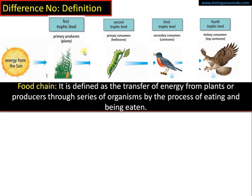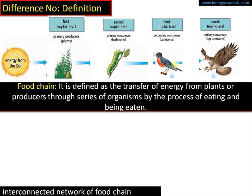Each step in the food chain is called a trophic level. Primary producers represent the first trophic level, herbivores or primary consumers represent the second trophic level, and so on. So a food chain can be defined as the transfer of food energy from plants or producers through a series of organisms by the process of eating and being eaten.